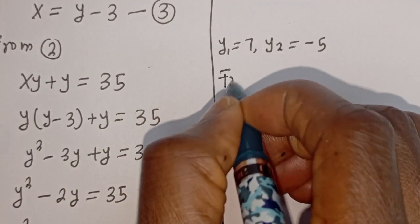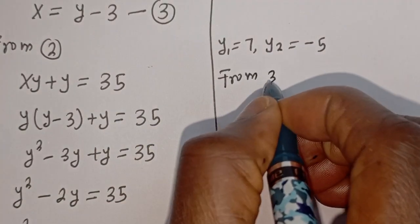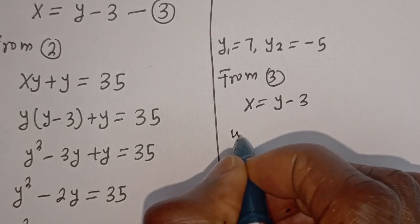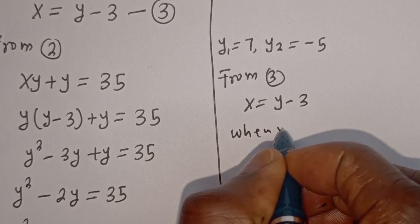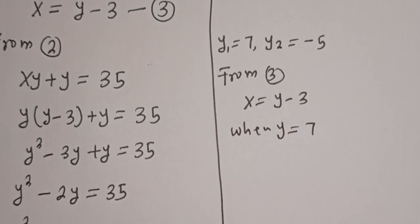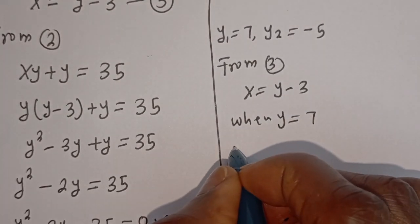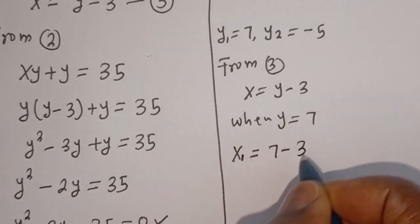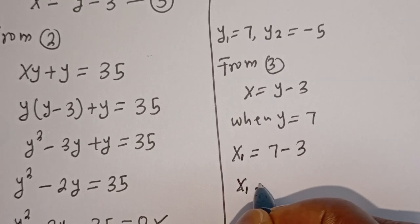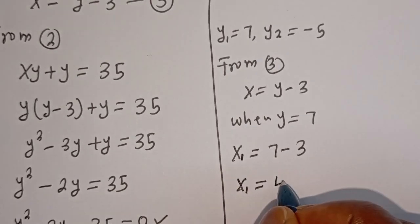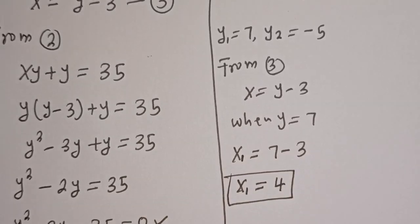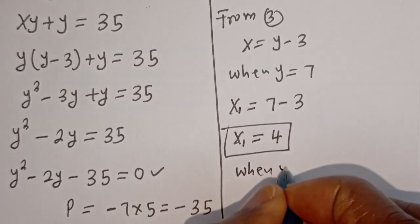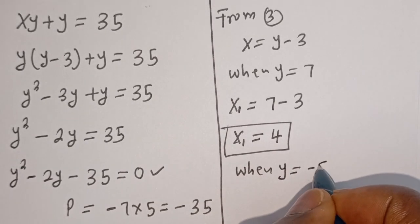We solve for x from equation 3: x is equal to y minus 3. When y equals 7, x₁ equals 7 minus 3, which is 4. And when y equals minus 5, x₂ equals minus 5 minus 3, which is minus 8.